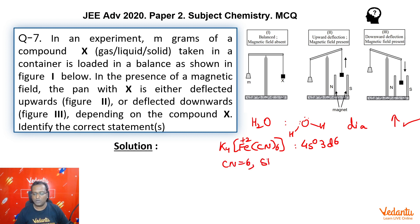We have strong field ligands and therefore easy pairing will take place and we'll have d2sp3 hybridization. No unpaired electron, diamagnetic again, upward deflection.